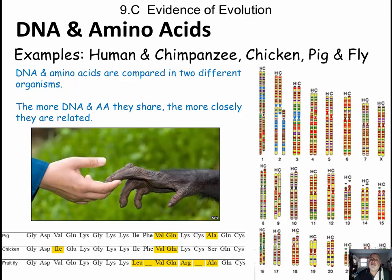Humans and chimpanzees — here's pig, chicken, and fruit fly. You can see there are quite a few similarities. It actually looks like the chicken and the pig are probably more closely related to each other than either is to the fruit fly.